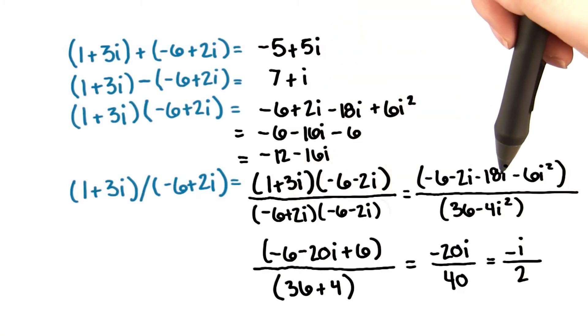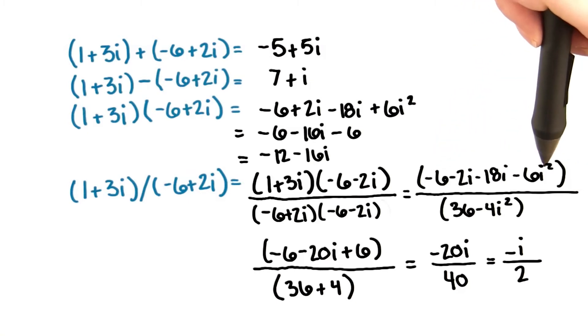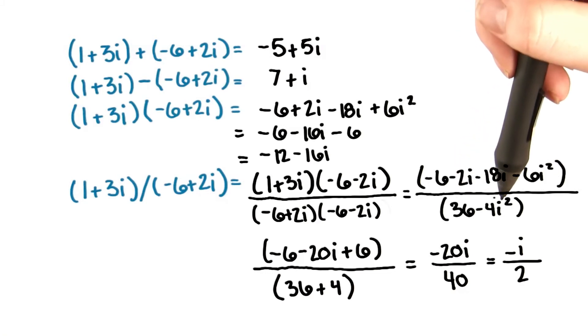Simplifying further, we get negative 6 minus 2i minus 18i minus 6i squared divided by 36 minus 4i squared, which gives us negative 6 minus 20i plus 6 divided by 36 plus 4,